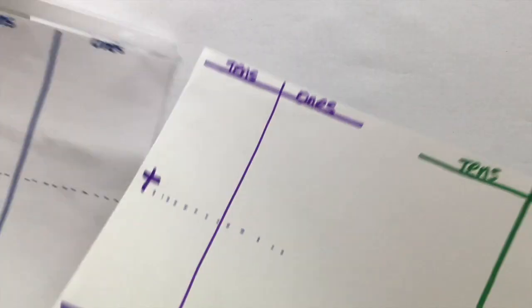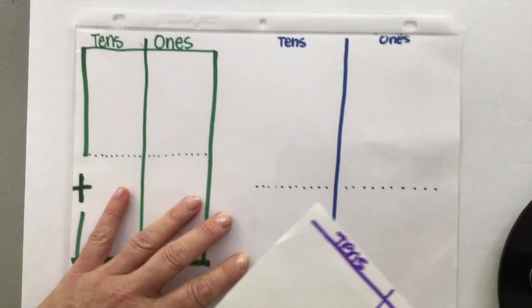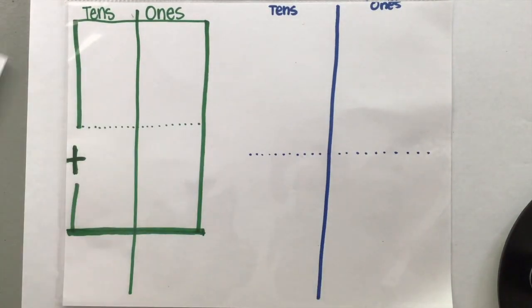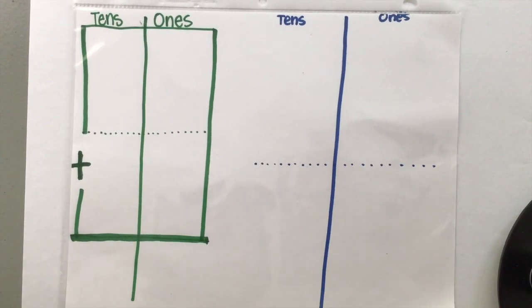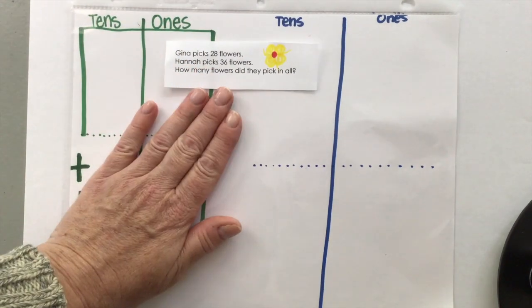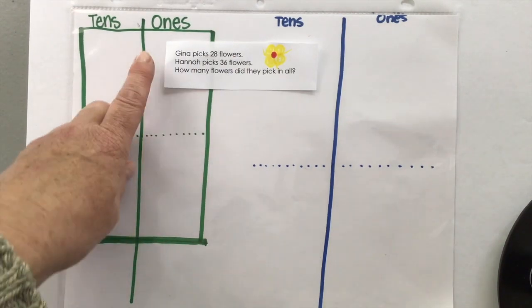I've put my place value board inside a sheet protector and you can do that if you want to use a dry erase marker and you can have, we can just use the same place value board over and over again. So let's have a look at our first problem. We're going to do an addition problem that will require regrouping.